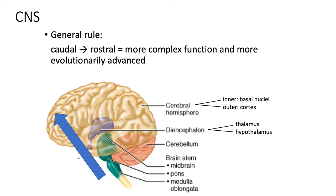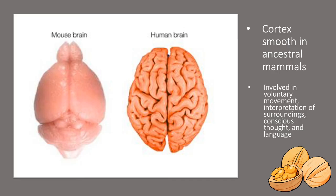The gyri are the squiggles atop the brain — this highly folded area. Comparing a mouse brain to a human brain, the gyri or folds are far less pronounced in the mouse. The cortex tends to be smoother in ancestral animals. The human brain looks like a walnut when cracked open. Those folds increase surface area and allow packing in of much more neural circuitry — in fact, a three-times surface area increase compared to if the human brain were smooth.